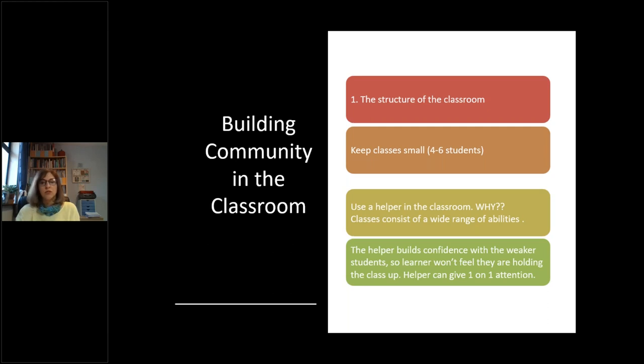So how we go about doing that is in the structure of the classroom, we keep the classes very small. So the maximum we might enroll in a class like this would be six, four to six students. And another thing that we do which is great for building community and just running the classroom is we use an adult literacy volunteer as a helper in the classroom.